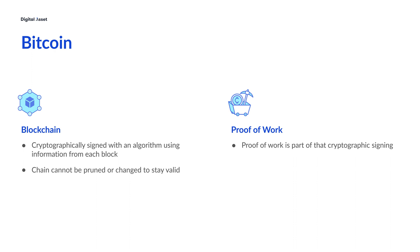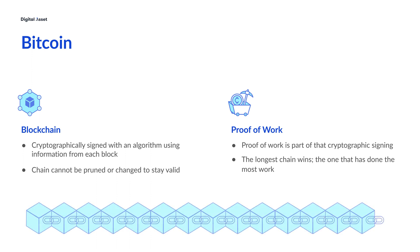If there's a disagreement, the longest chain wins — the one that has done the most work. In simple terms, you could represent Bitcoin as a chain of blocks that have been validated by miners, confirming that the transactions in the blocks have happened. This chain goes back to the very beginning when Bitcoin was created.